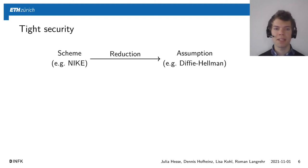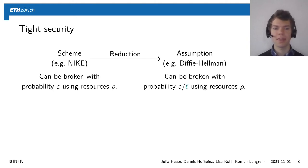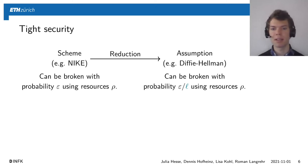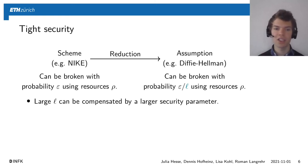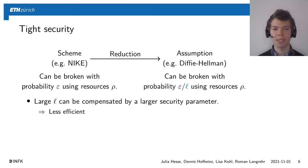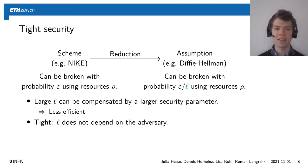What do we mean by tight security? When we want to prove that our NIKE achieves this security notion, we typically give a reduction to some underlying assumption. This reduction guarantees that when we can break the scheme with probability ε using some resources ρ, we can break the underlying assumption with probability ε/L using approximately the same resources ρ. This L is called a security loss. A large security loss L can be compensated by choosing the security parameter larger, but the disadvantage is that your scheme gets less efficient. So it is beneficial to look for schemes that have a small security loss in the first place, and this is captured by tightness.